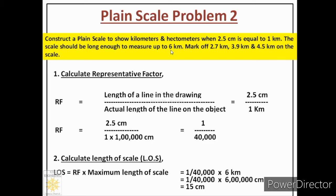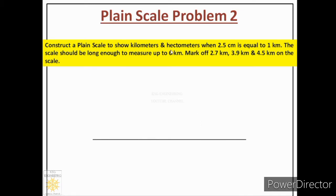Now let us solve this problem. First, we draw a line of 15 centimeters. Then we decide how many parts to divide it into. Since the maximum length is 6 kilometers, which is less than 10, we apply the thumb rule and make 6 equal parts. Dividing 15 centimeters by 6 gives one part length of 2.5 centimeters, and each part represents 1 kilometer.